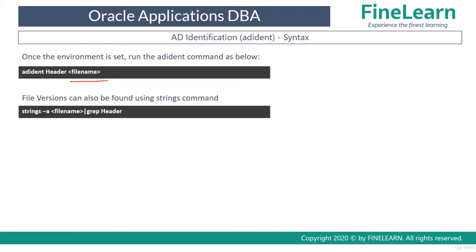Alternatively, you can also use the Linux command strings to find the version. You can simply run strings -a filename | grep header. Both are valid and both can be used. There is not much difference because adident is an AD utility used to check the file version, whereas strings is a general OS command which can also be used to find the file version.